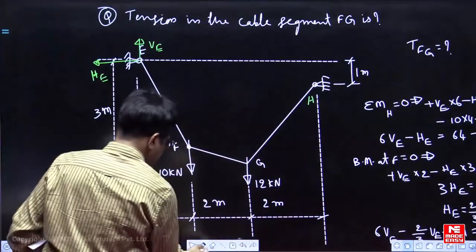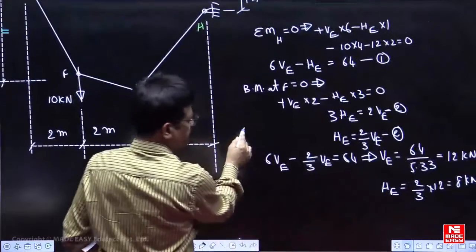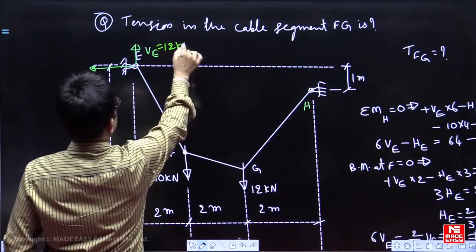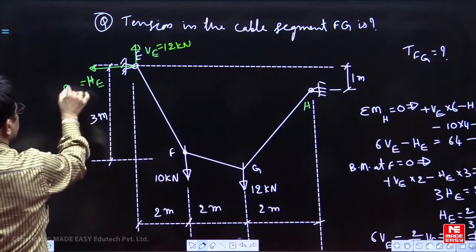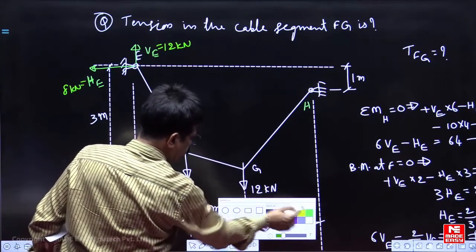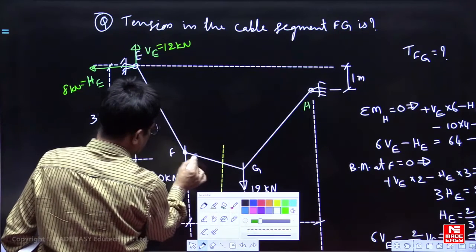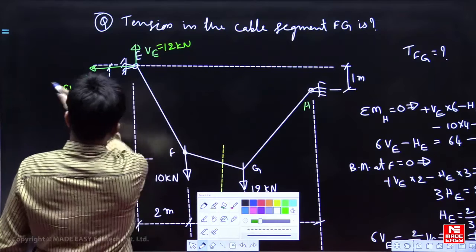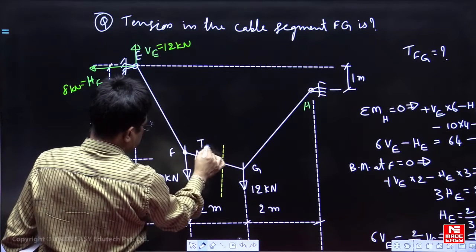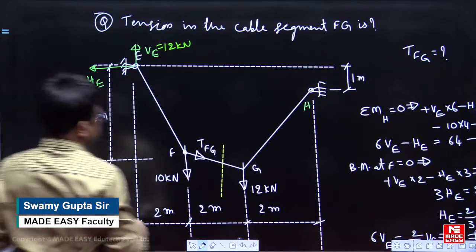Now, you see you got this value VE is 12, HE is 8 kilonewton. Now, cut the cable here, cut it here. The tension in the cable, if I cut this value to balance this one it should go at right side. Tension in the cable FG, X component is equal to 8, Y component is 12.